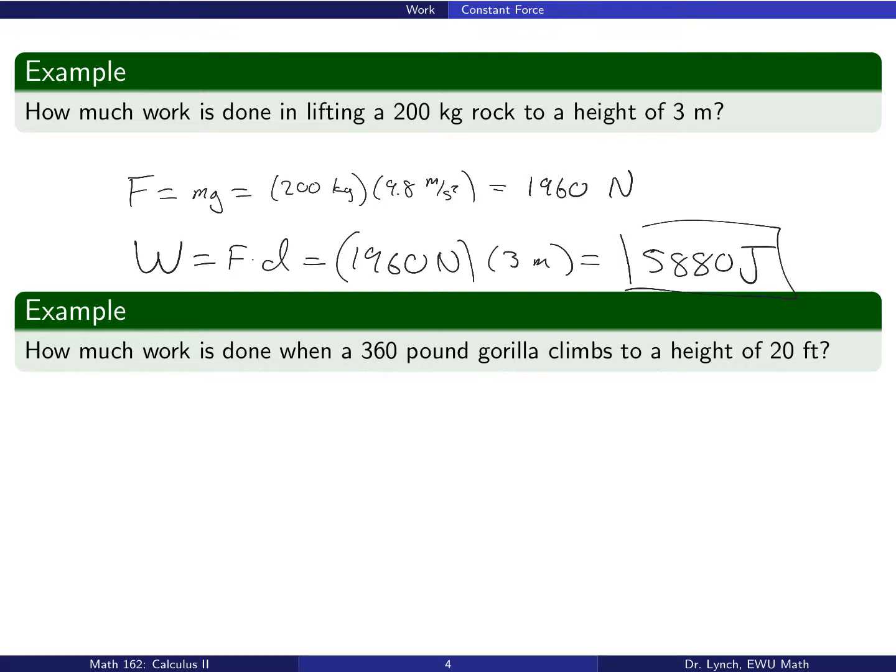Now, similarly, we'll talk about the work done when a 360-pound gorilla climbs to a height of 20 feet. And in this case, there's no extra calculation to do because in imperial units, 360 pounds is the force that we'll use. So again, 360 pounds over the height of 20 feet, 7,200 foot-pounds.